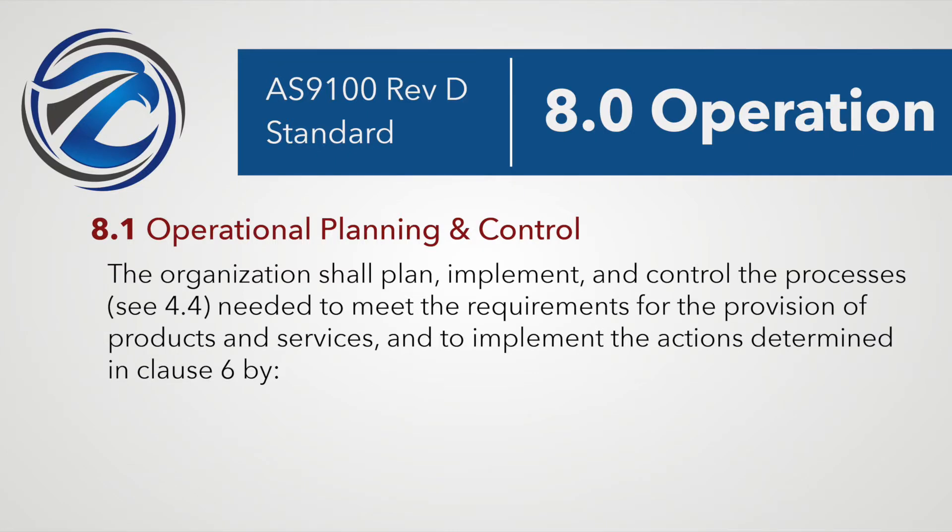It's even more significant in the way they worded the first sentence. The organization shall plan, implement, and control the processes, and then they reference 4.4, which covers the processes needed to meet those requirements. We did several episodes on 4.4 — we'll try to put a link on screen. In a nutshell, 4.4 is how you're managing your processes. If you're on Rev C, you already have some of this in place. They've added some things, but you need to identify the processes, the inputs, the outputs, sequence and interaction, how you know the processes are effective, and who's responsible.